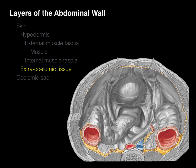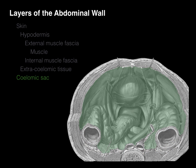Next is the extrasolomic tissue — the fatty adipose tissue and connective tissue layer between the internal muscle fascia and the solomic sac. In the front, it's called preperitoneal fascia because the central cavity is the peritoneal cavity, so this is the fat before it. On the back side of the abdomen is the retroperitoneal fascia, the fascia in the retroperitoneal space, which is behind or outside the solomic sac.